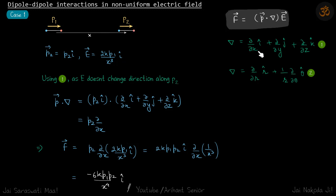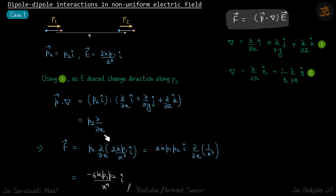We can safely use this del operator since the electric field and the dipole are both aligned the same way, and E does not change direction on that path. That's why we wrote both in the form of î-cap. From here, p·del gives p2 î-cap dotted with the del operator, so only the ∂/∂x term remains, leaving us with p2 · ∂/∂x. We operate this on the electric field, taking 2k·p1 and î-cap out as constants.